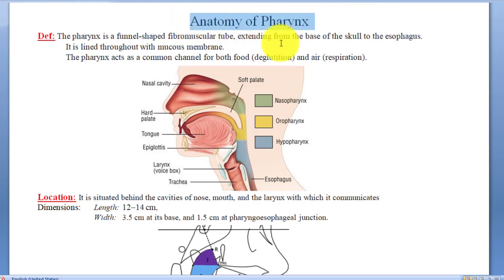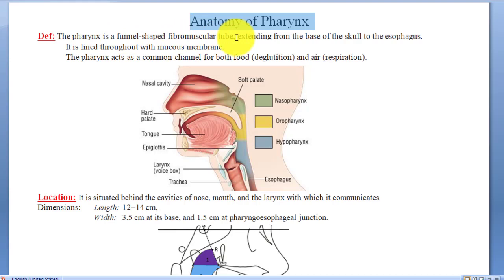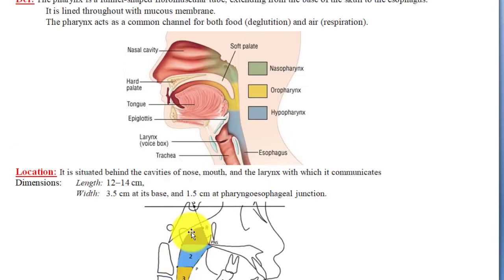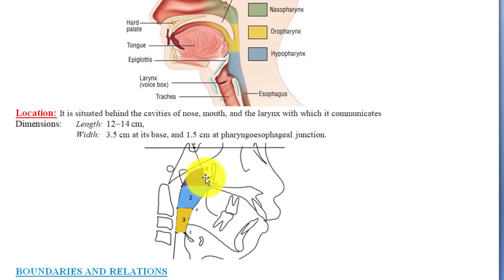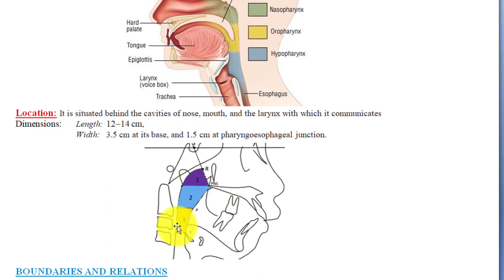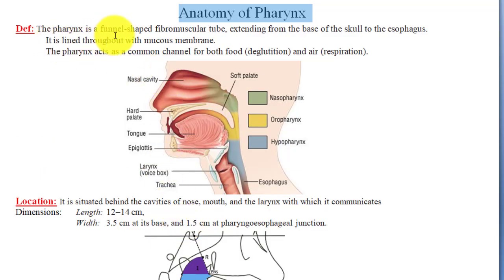Here I have written the anatomy of the pharynx. The pharynx is a funnel-shaped fibromuscular tube extending from the base of the skull to the esophagus. Fibromuscular means it is made up of fibers and muscles. It begins at the base of the skull and ends at the pharyngoesophageal junction.